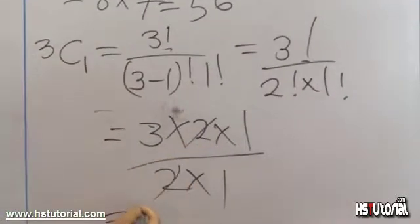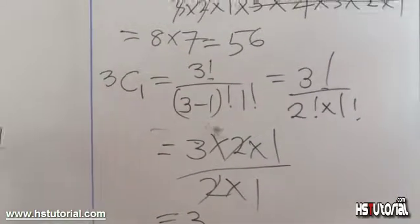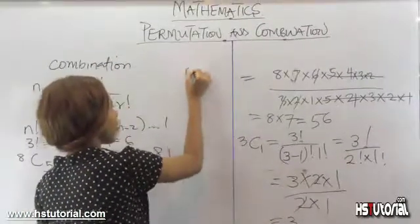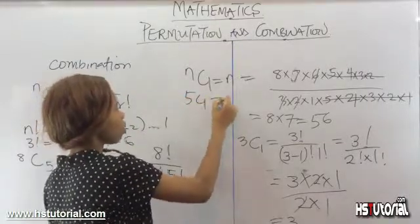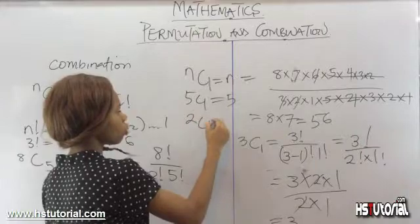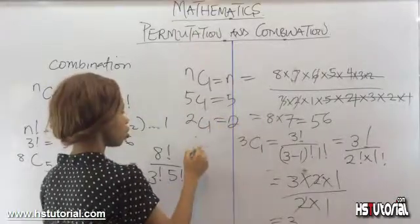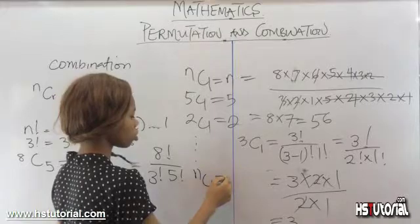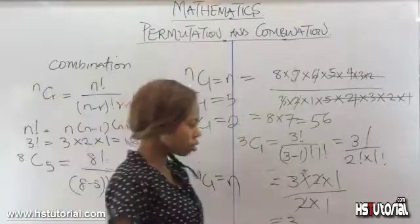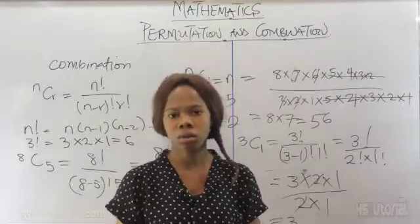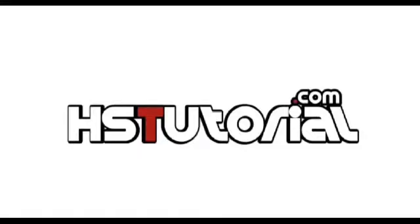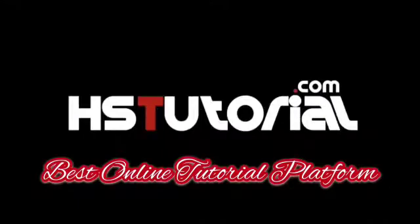This gives us a simple rule: n combination 1 is always equal to n. So 5 combination 1 will always give you 5, and 2 combination 1 will always give you 2, and so on. This is just an introductory video on combination, and we will take some calculations in upcoming videos.